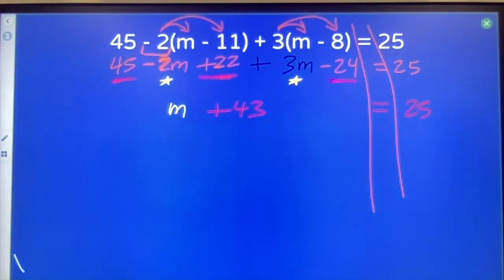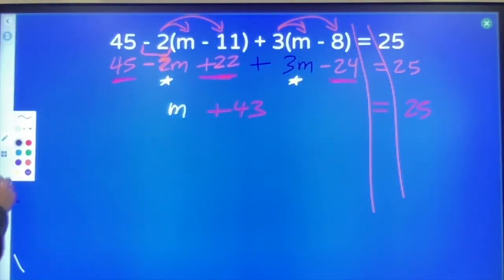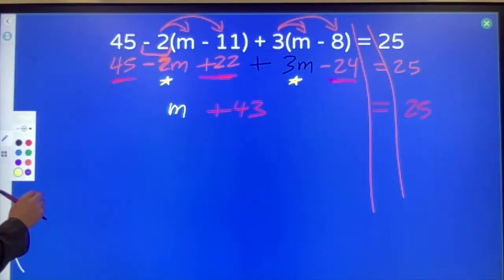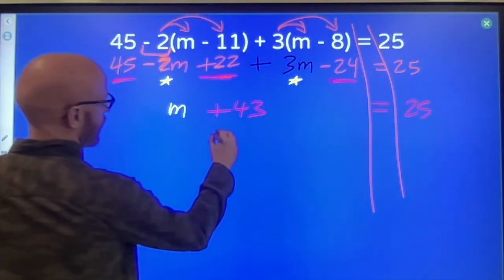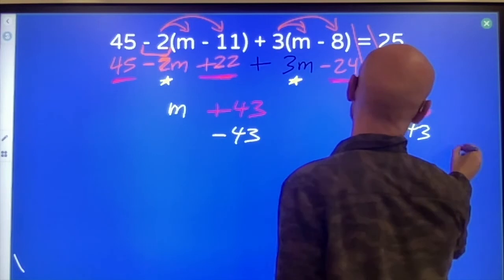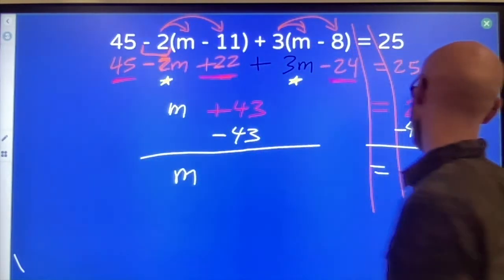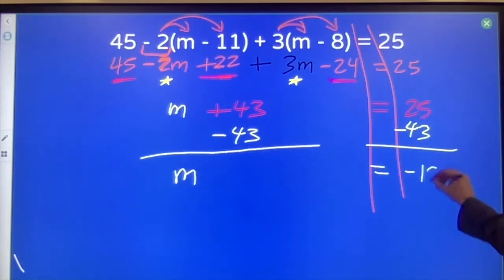At that point, I've distributed, I've combined. Now I'm ready to deal with the opposite operations. There's only one operation to undo. So let's subtract 43. And we have m equal to negative 18.